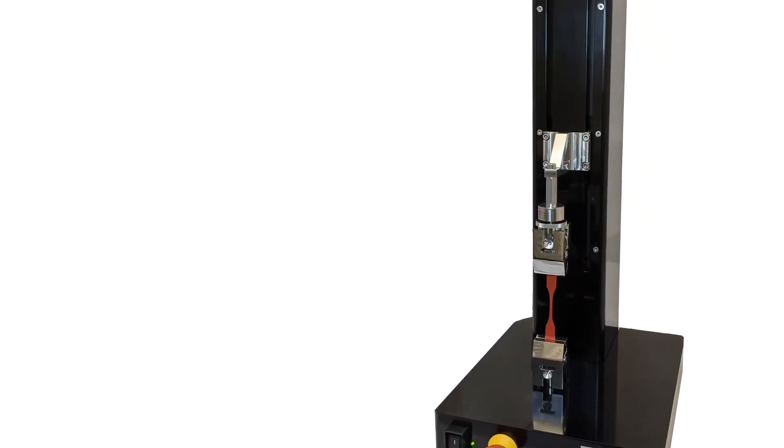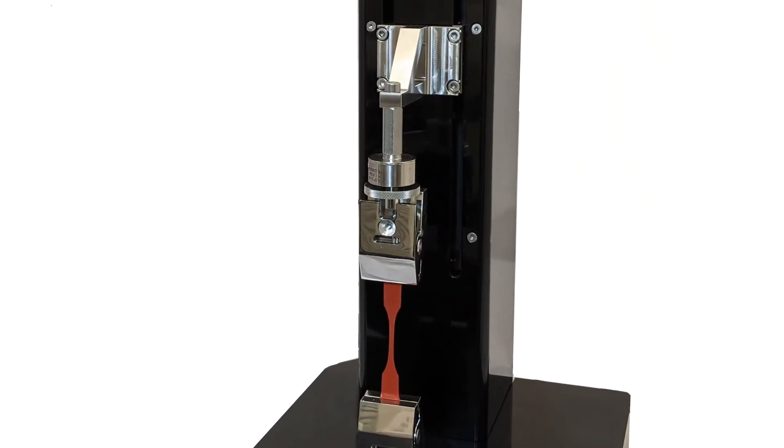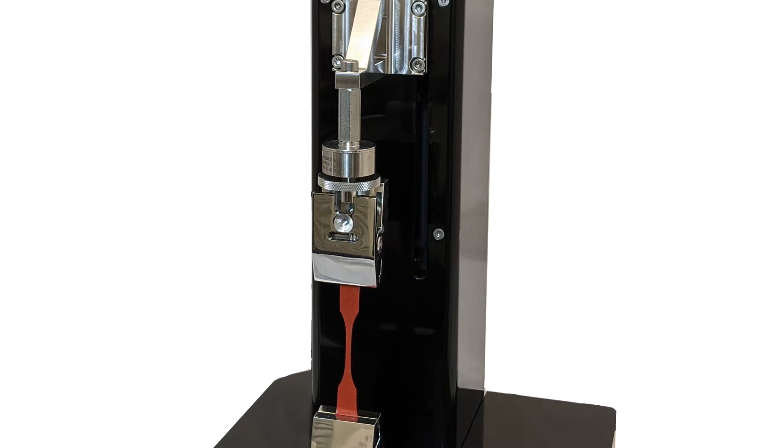Let's first take a look at the most common type of test, a vertical tension test. On the upper side, we have the load cell mounted to the crosshead with a grip.